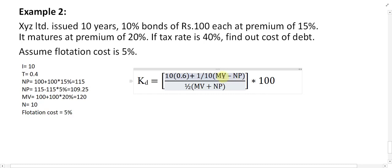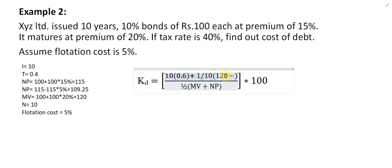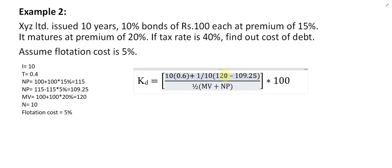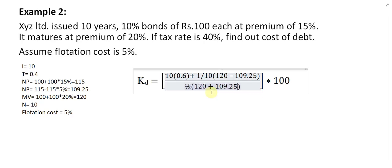MV is equal to 120 and NP is equal to 109.25. Put these values into the formula. The numerator includes 6 plus (MV minus NP) divided by N, and the denominator is (MV plus NP) divided by 2.